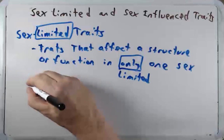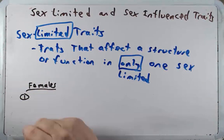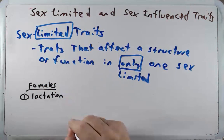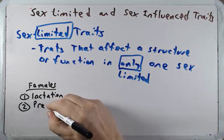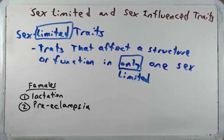Thinking about sex limited traits in females, you could think of things like lactation — producing milk to feed their children. That is only in females. Another example is preeclampsia, a condition that some pregnant women develop that results in high blood pressure, which can be dangerous for both the mother and the child.